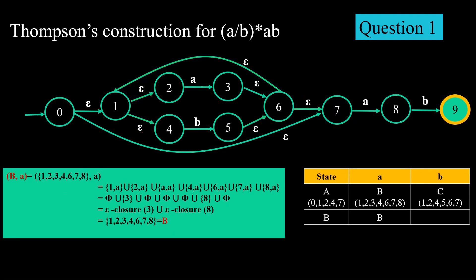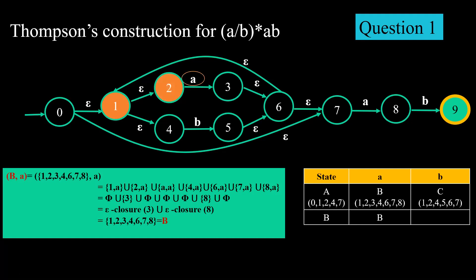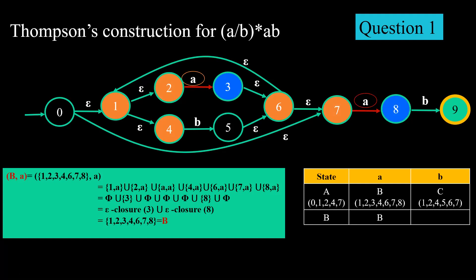We are adding these values to the table on the right side of the screen. Now we find B on input 'a'. Set B = {1, 2, 3, 4, 6, 7, 8}. State 2 on 'a' gives 3, state 7 on 'a' gives 8, and all others give nothing. This gives eClosure(3) union eClosure(8), which we have already calculated and named as set B. So B,a = B.